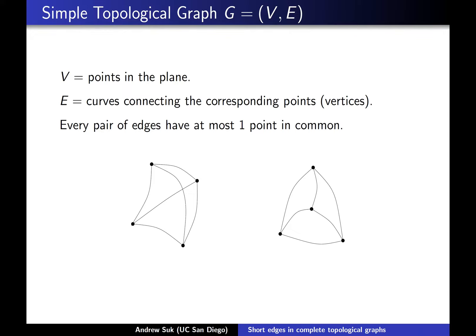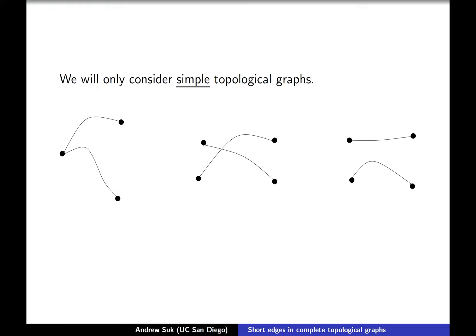In simple topological graphs — which is the only thing I'll talk about from now on — every pair of edges looks like one of three pictures. Either two edges will have a common endpoint and that's the only point they'll have in common, or they'll have a common interior point, which is known as a crossing, or they simply won't have any points in common and so they'll be completely disjoint.